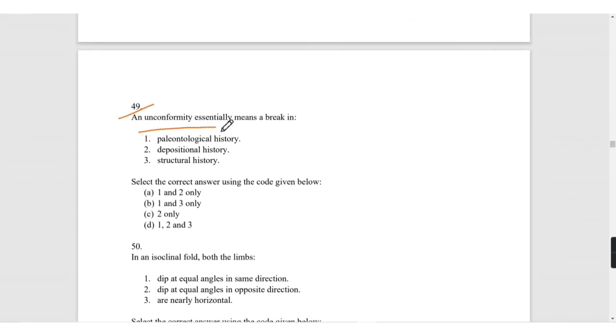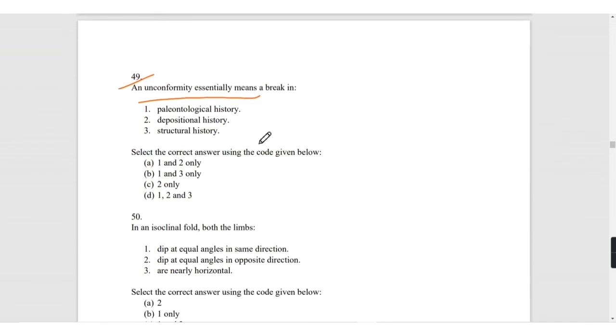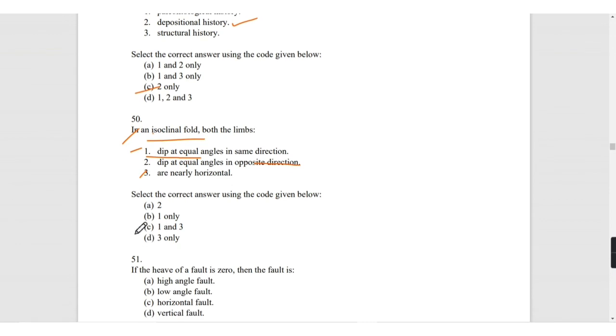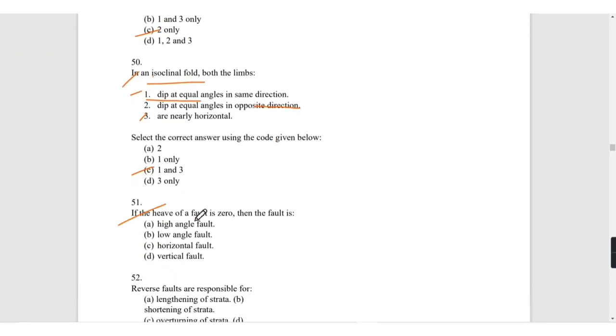An unconformity essentially means a break in the depositional history. In an isoclinal fold, both the limbs dip at equal angle in same direction, correct. Dip at equal angle in opposite direction, no. Are nearly horizontal, yes. So one and three are correct. If the heave of fault is zero, then the fault is vertical fault.